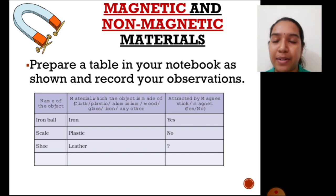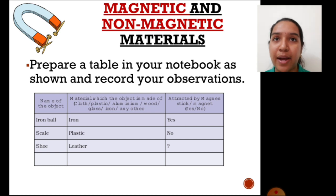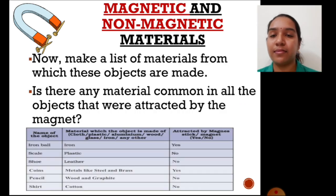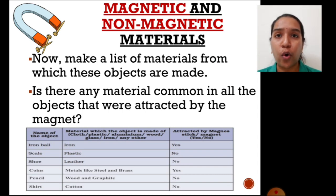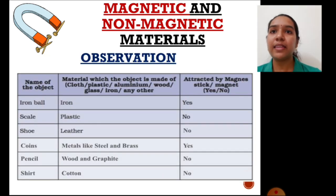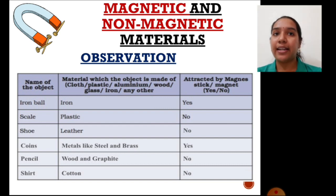Now observe this table. Prepare a table like this in your notebook and record your observations — the name of the object, what material it is made of, and whether that object is attracted by a magnet, in yes or no. Make a list of all the objects you have tested. What common material do you observe in all the objects attracted by the magnet? If you observe the table, the objects made of materials like iron and other metals like steel and brass are attracted by the magnet, and the rest were not.